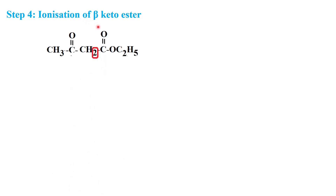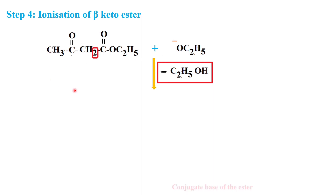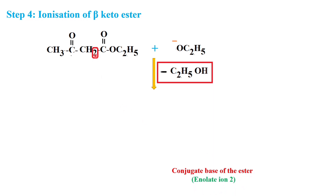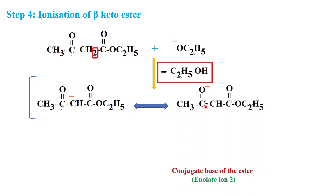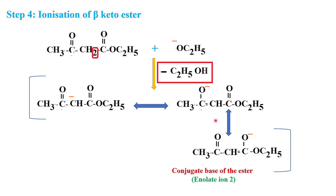Step 4 is the ionization of the beta-ketoester. The beta-ketoester combines with an ethoxide ion. One proton is removed from the beta-ketoester and added to the ethoxide ion, released as ethanol. This gives the conjugate base of the ester, also called enolate ion 2. This carbon gets a negative charge, and we can write three resonance structures for this enolate ion.